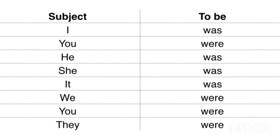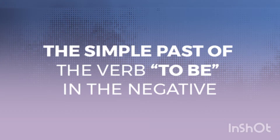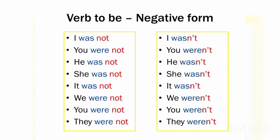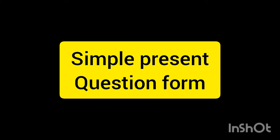Simple past tense — الماضي — affirmative form — الصيغة التأكيدية: I was, You were, He was, She was, It was, We were, You were, They were. The simple past of the verb to be — negative form — صيغة النفي: I was not, You were not, He was not, She was not, It was not, We were not, You were not, They were not. الصيغة المختصرة: I wasn't, You weren't, He wasn't, She wasn't, It wasn't, We weren't, You weren't, They weren't.